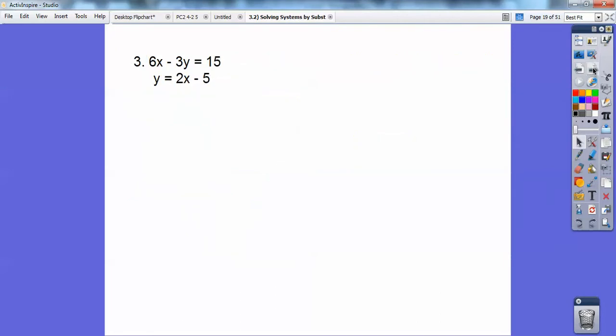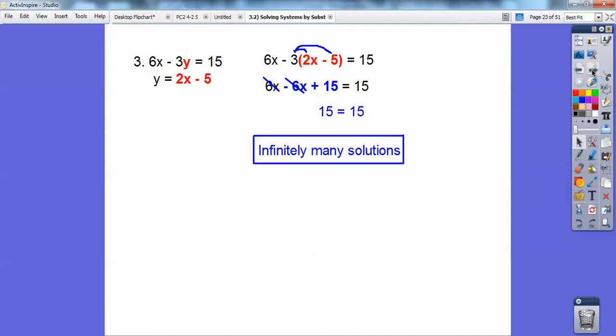Alright, let's try one more, you guys. Go ahead and put that y into the top y right there. I made that one red. Distribute the negative 3 through and you get 15 equals 15. The 6x's cancel out. When this happens, you guys, when 15 equals 15, it doesn't matter what x is. 15 equals 15. It doesn't matter what y is. 15 equals 15. So when you get an agreement like that, you get infinitely many solutions. Don't say all real numbers. It's infinitely many solutions.